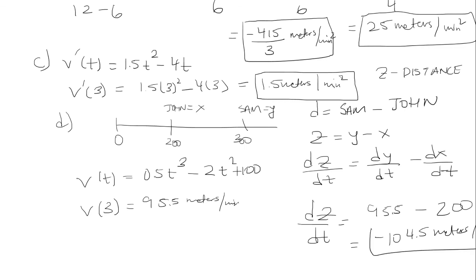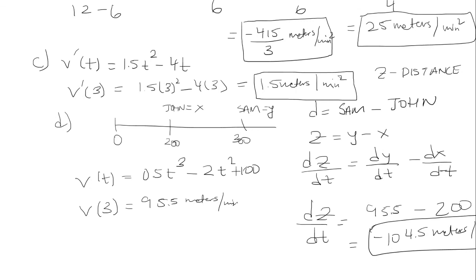And this makes sense that it's negative since John is faster. John's velocity is larger and John is trailing Sam. So we expect the distance to be negative, the rate of distance negative, because the distance between them is shrinking. And this is our final answer.